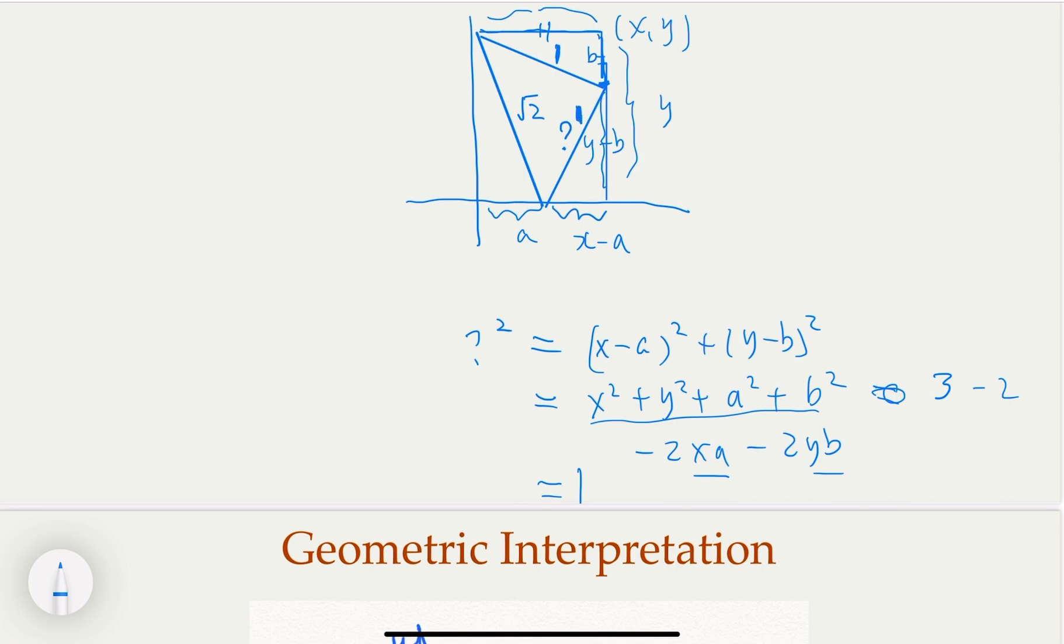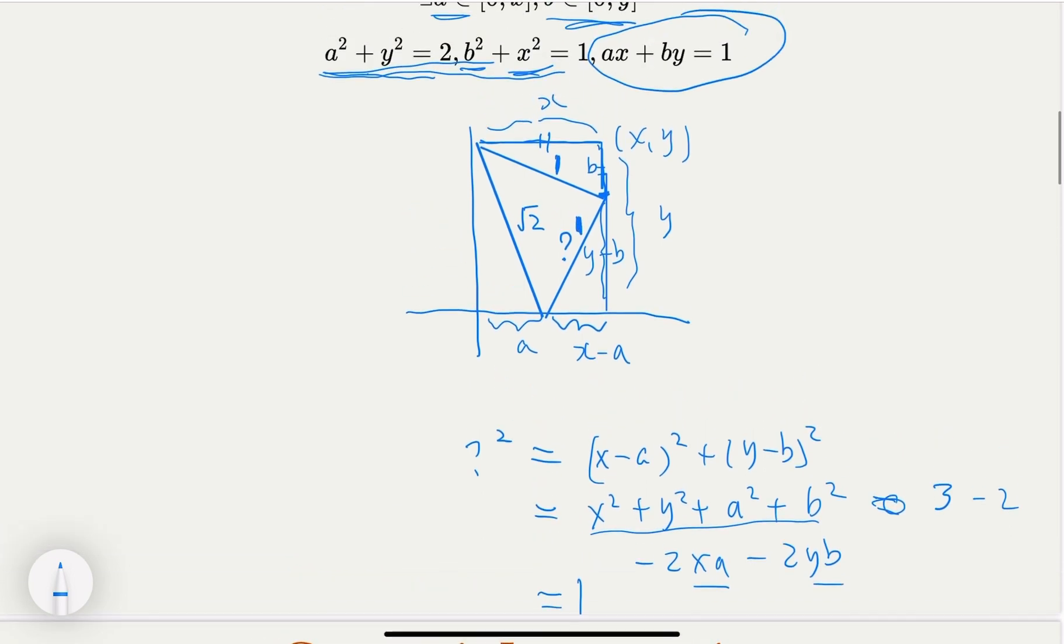So notice that we have a triangle with sides 1, 1, square root 2. Does it sound familiar? Yeah, that's a right triangle.